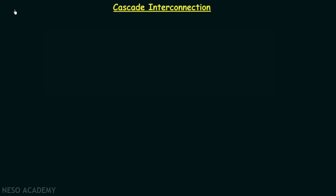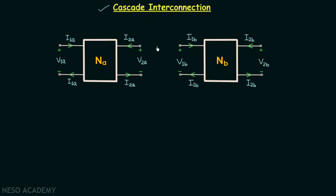The final type of interconnection we are required to understand is cascade interconnection. The two networks are said to be in cascade interconnection when the output of the first network is the input of the second network. Therefore, we will join the first terminal of the output port of NA to the first terminal of the input port of NB.